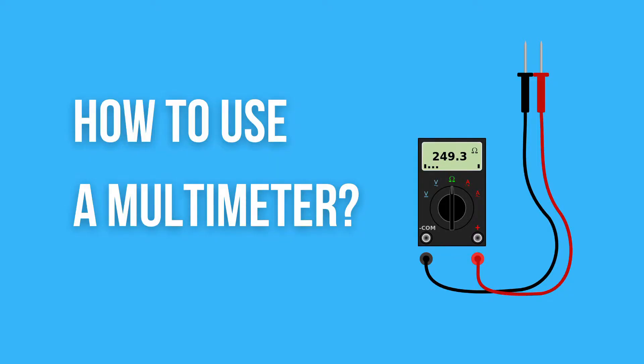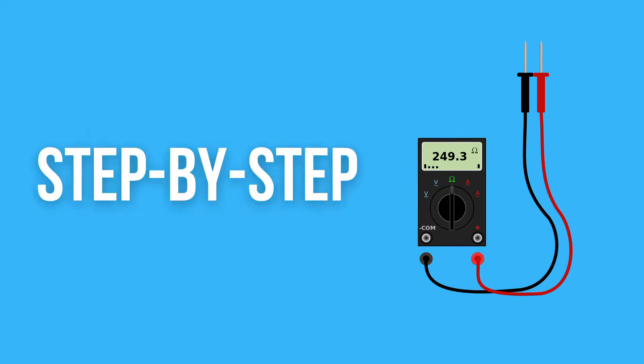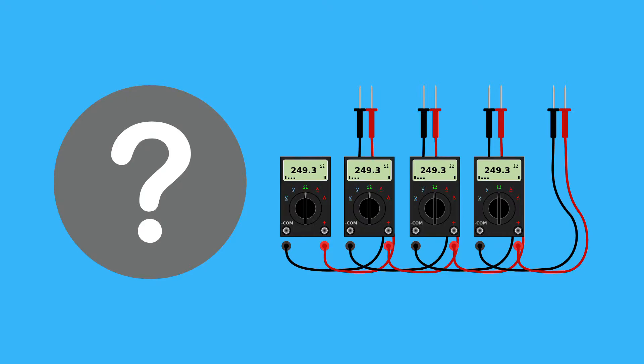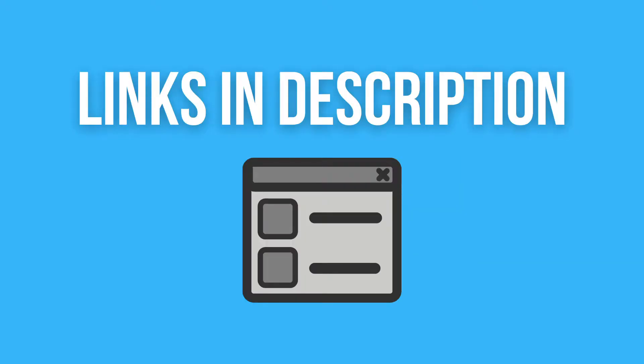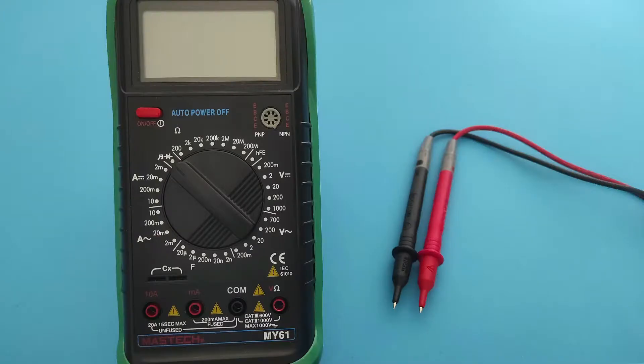Are you wondering how to use a multimeter? It's simple, I will explain you step by step. If you're unsure which multimeter to purchase, check out the links in the description. A multimeter is a simple device that we use to measure some electrical properties to determine the correctness of devices, installations, and other things.